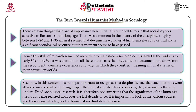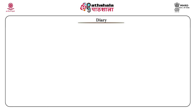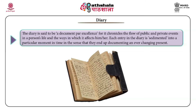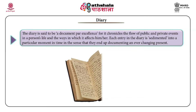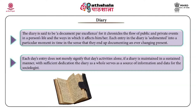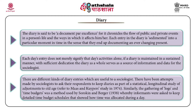It is important to look at the various sources and their usage which gives the humanist method its uniqueness. Number one, the diary. The diary is said to be a document par excellence, for it chronicles the flow of public and private events in a person's life and the ways in which it affects him or her. Each entry in the diary is sedimented into a particular moment in time, documenting an ever-changing present. Each day's entry does not merely signify that day's activities alone. If a diary is maintained in a sustained manner with sufficient dedication, the diary as a whole serves as a source of information and data for the sociologist.